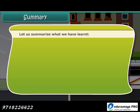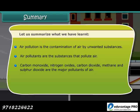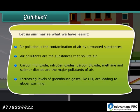Let us summarize what we have learned. Air pollution is the contamination of air by unwanted substances. Air pollutants are the substances that pollute air. Carbon monoxide, nitrogen oxides, carbon dioxide, methane, and sulfur dioxide are the major pollutants of air. Increasing levels of greenhouse gases like CO2 are leading to global warming.